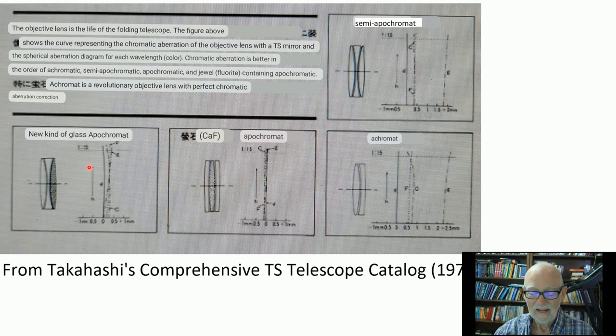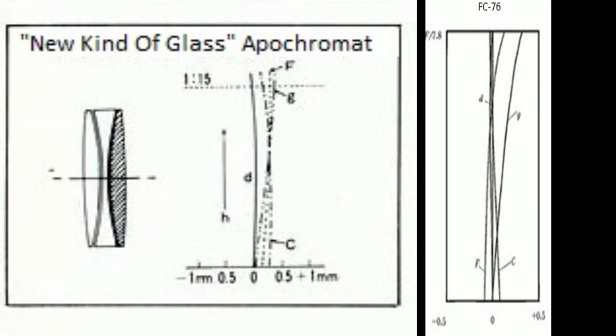What a deal. What a can of worms I've opened up here with this thing. Here's the new kind of glass apochromat compared with a modern FC76 F7.8 fluorite doublet. You can see it. Not bad. Does pretty well.